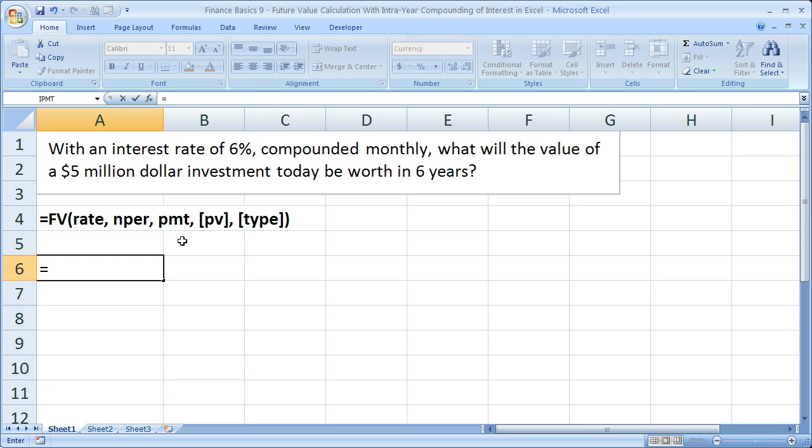So equals FV, open parenthesis. Now we need the rate. What is the interest rate? Remember, the first one I'm doing yearly. So the interest rate would simply be 6%. Remember you enter it as a decimal, so 0.06. Number of periods—well, it is 6 years, so 6 for the number of periods, then comma.